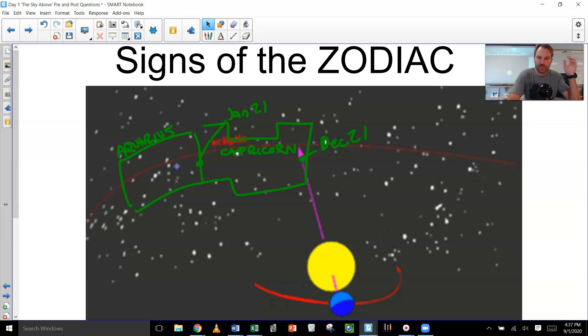So the sun enters into Capricorn on the 21st of December, and then it goes into Aquarius on the 21st of January. So now it's really crazy because the sun is not moving. The sun is actually the thing that's still, and we're like, oh, the sun is in this constellation.